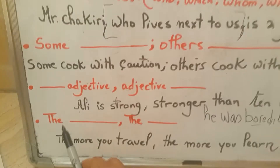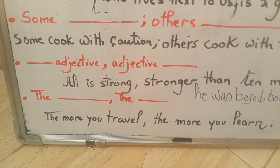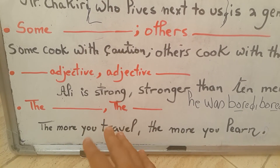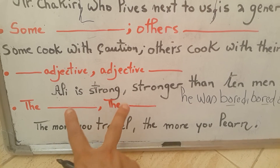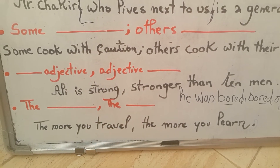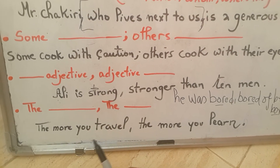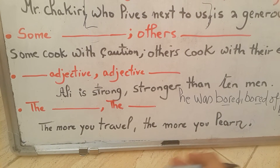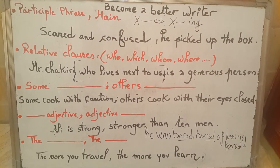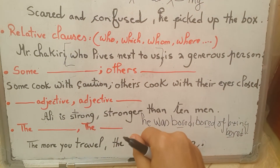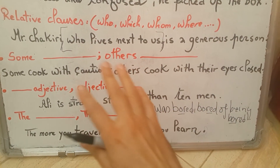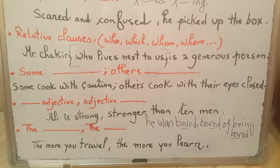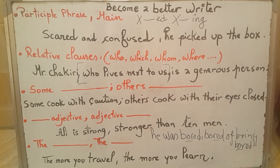The last structure uses 'the... the', which are considered correlative conjunctions — words that join two clauses together in two parts. For example: 'The more you travel, the more you learn.' Having some grammar knowledge is really necessary for your writing, speaking, and comprehension. Thank you for watching and see you all soon.